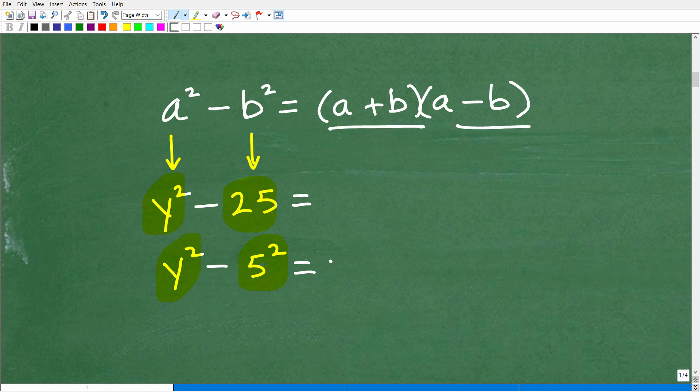And now it's simply just going ahead and applying this formula. So it's going to be y. This is going to be like our a. This is like our b. And we just follow the pattern. So this would be y plus 5 times y minus 5. And once you do this a lot, this will be pretty easy.